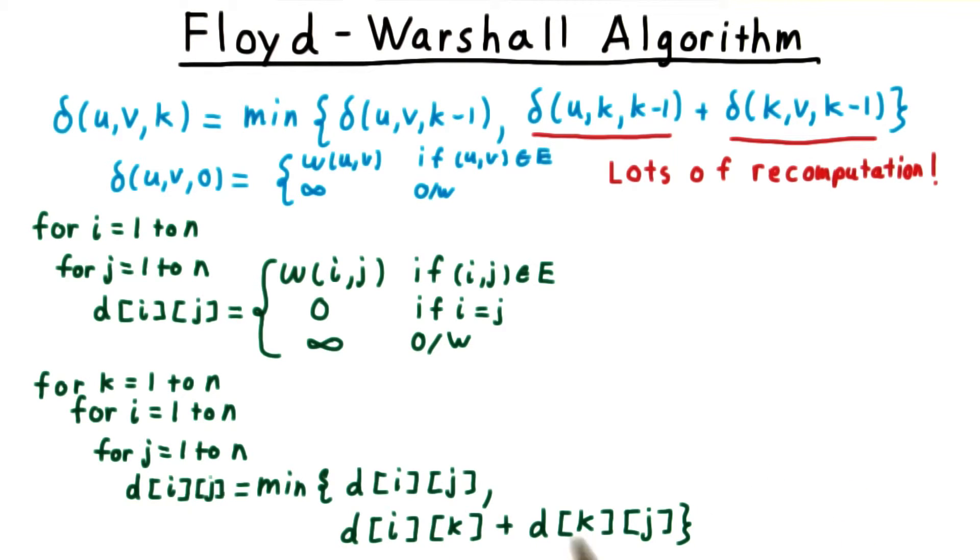Hence, we don't need to worry about using an outdated value in this loop here. To extract not just the weights of the shortest paths, but also the paths themselves.